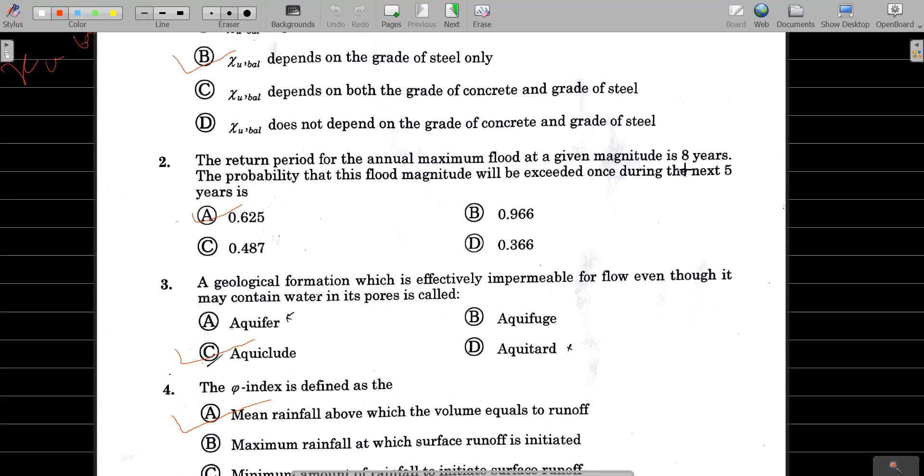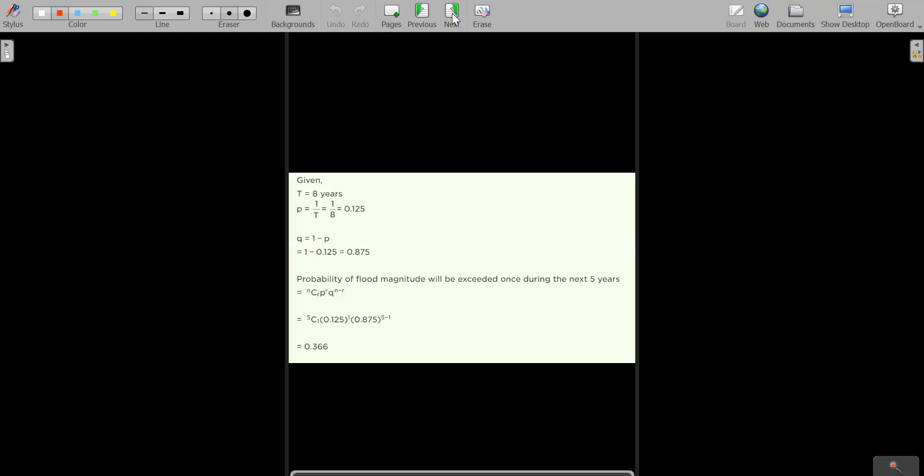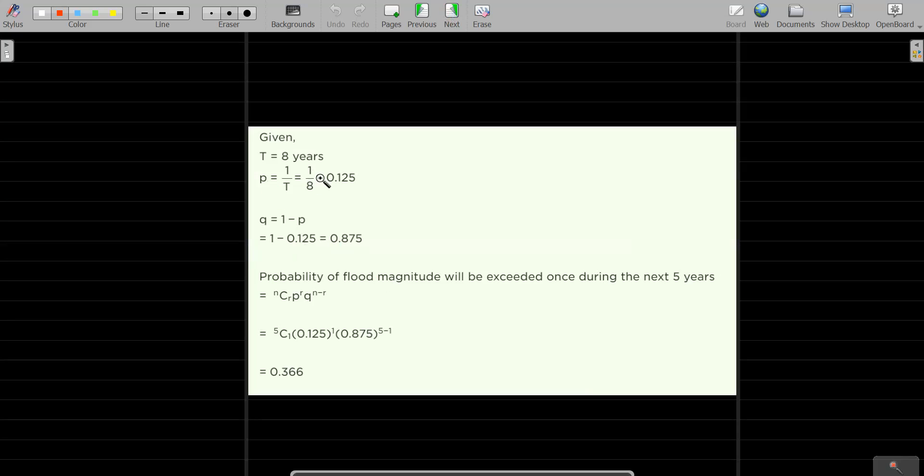Next question: The return period of the annual maximum flood at a given magnitude is 8 years. The probability that flood magnitude will exceed once during the next 5 years. This question is complicated and needs calculator for computation. The time period T is 8 years, so probability P is 1 by T, which is 1 by 8 equals 0.125.